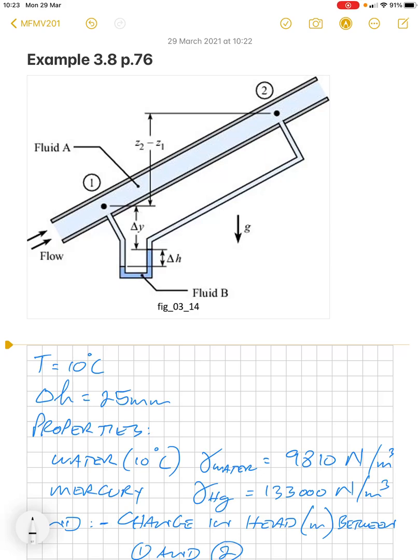This is example 3.8 on page 76 in your textbook. As you can see in the diagram, we have a pipe with fluid A that's flowing in it, flowing from left to right. The pipe is inclined so it's actually flowing uphill.